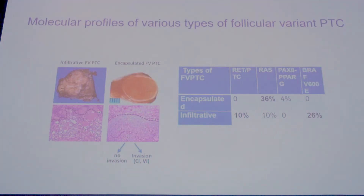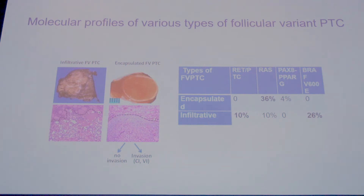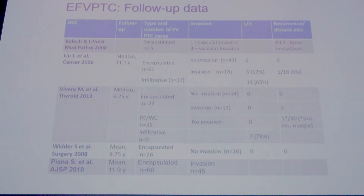Molecular data accumulated over the last 15 years showing that infiltrative and encapsulated follicular variant of papillary carcinoma have very different molecular profiles. Encapsulated tumors mostly had RAS, PAX8/PPARγ mutations, while infiltrative tumors had BRAF — the molecular signature of papillary carcinoma. There were also differences in molecular profiles between different types of tumors.